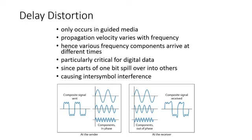Delay distortion occurs because the velocity of propagation of a signal through a guided medium varies with frequency. For a band-limited signal, the velocity tends to be highest near the center frequency and falls off toward the two edges of the band. Thus, various frequency components arrive at the receiver at different times, resulting in phase shifts. Delay distortion is particularly critical for digital data because signal components of one bit position can spill over into other bit positions, causing inter-symbol interference, which is a major limitation on maximum bit rate over a transmission channel.